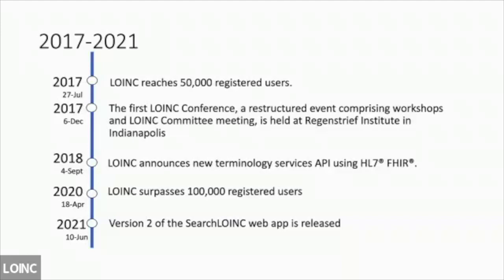In 2018, LOINC announced a new terminology service API using HL7 FHIR. And then in 2020, we hit 100,000 registered users. In 2021, version 2 of the Search LOINC web app was released, and it's beautiful — compliments to the team that built that system.